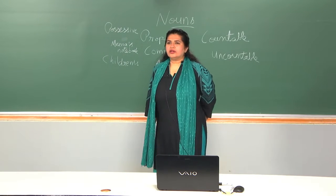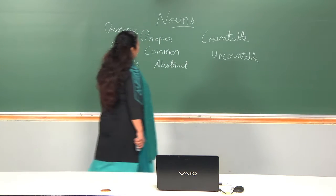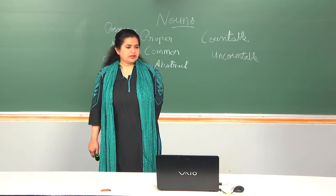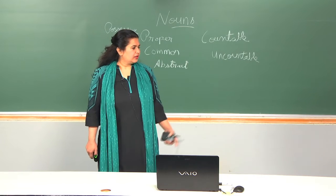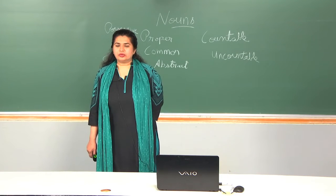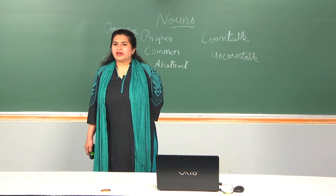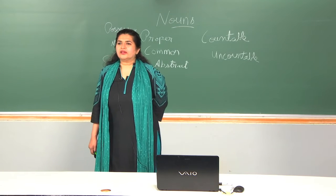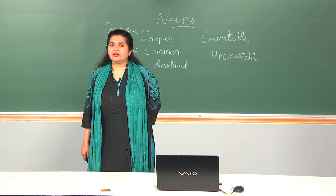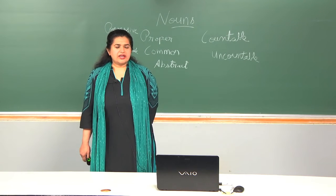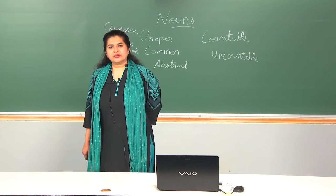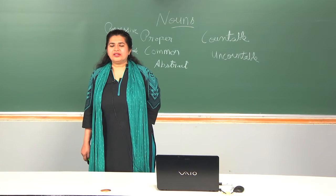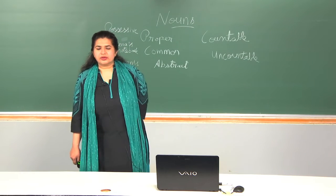Now let us move on to countable nouns. Countable nouns are for things we can count using numbers: 2 cameras, 3 computers, 6 chairs. Countable nouns have a singular and a plural form — one table, two tables. The singular form can use the determiner a or an: I have a pen, I have an umbrella. If you want to ask about the quantity of a countable noun, you ask how many — combined with the plural countable noun.